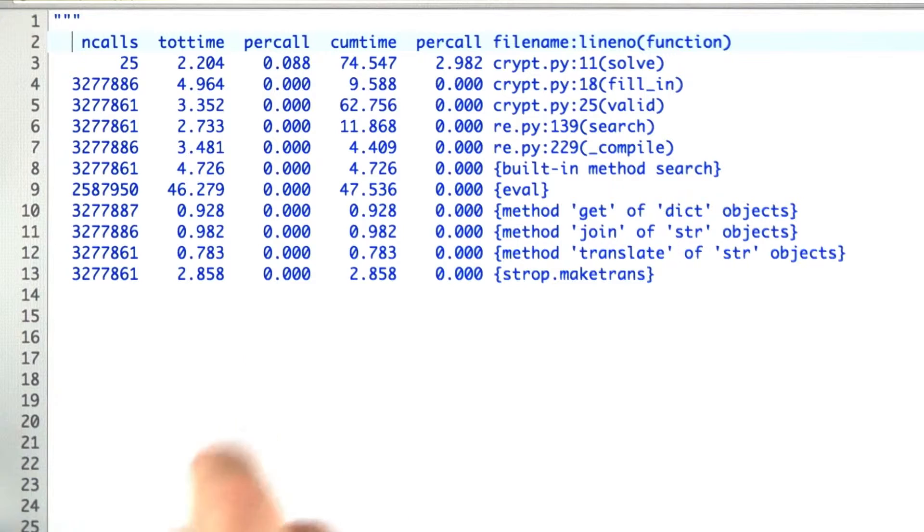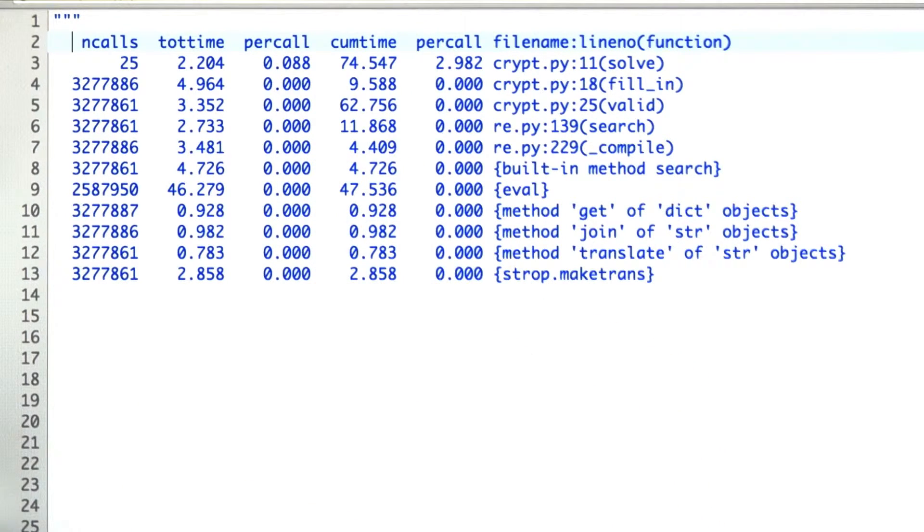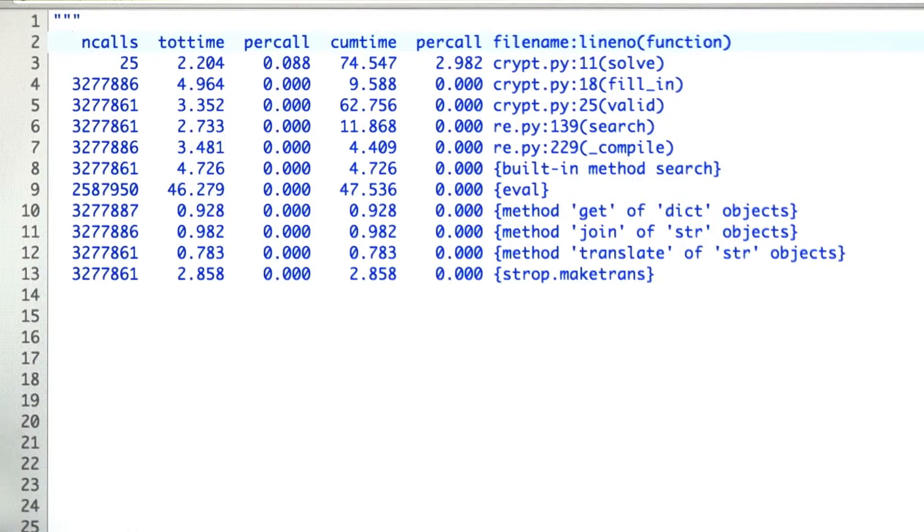If we want to make our program faster, it seems obvious that we better look where the time is. Out of that 75 seconds, 63 of it is within valid, so that's where we have to look. Of valid, 47 seconds is within eval. If we want to make our program faster, it makes sense to concentrate our efforts on the parts where most of the time is. It's not just a good idea,